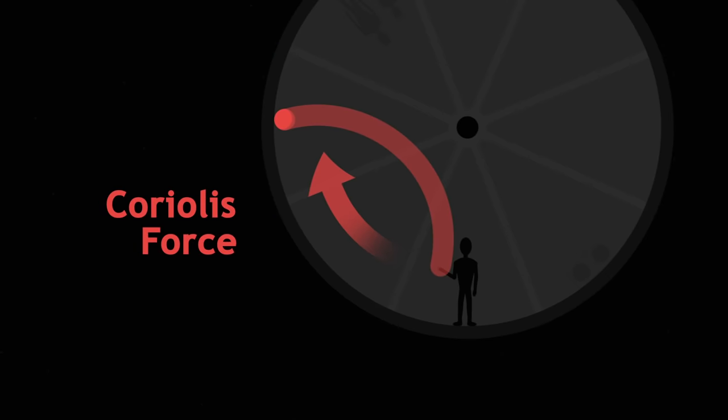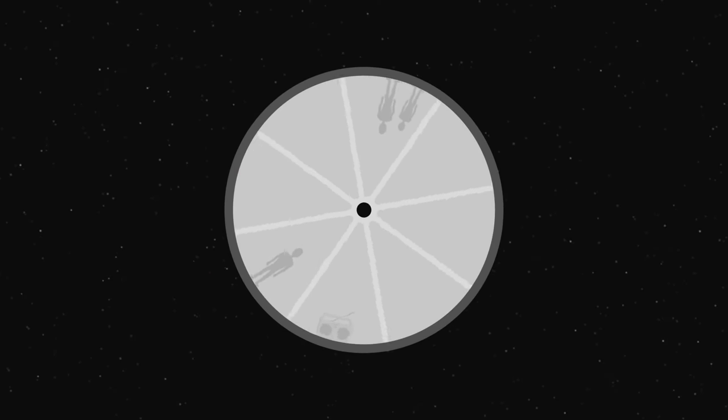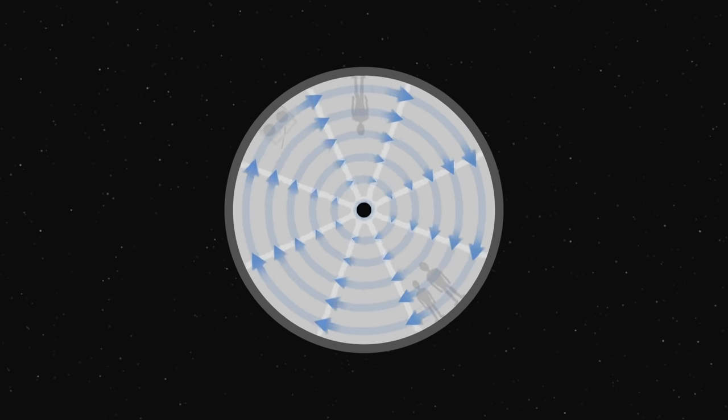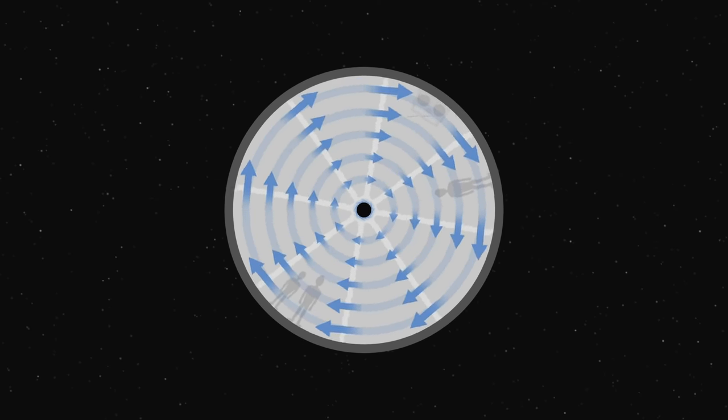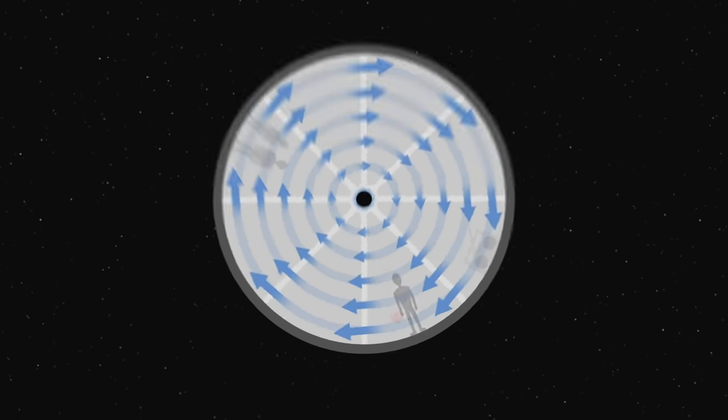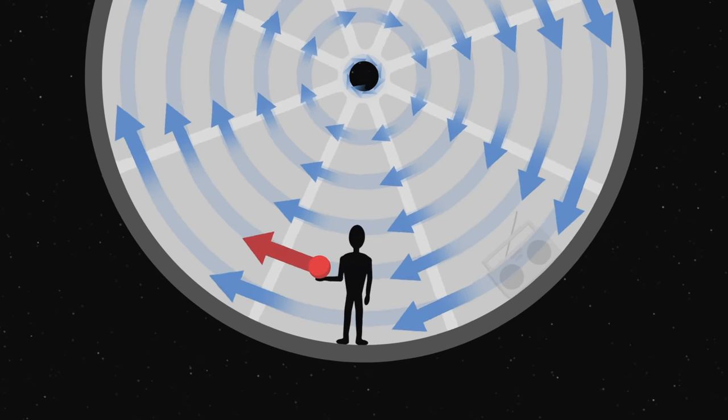To understand the Coriolis force, let's look at the situation from the outside. When the wheel spins, each point follows a circle. These circles are faster when the point is far from the centre because it must travel a greater distance. When the astronaut holds the ball in his hand, it follows one of these circles with the appropriate speed.